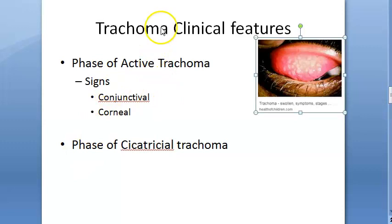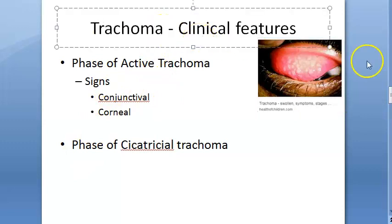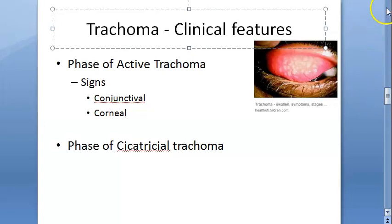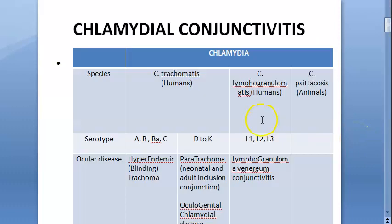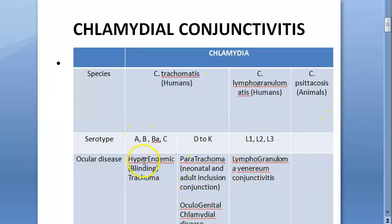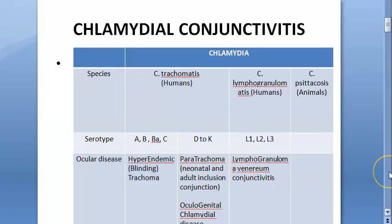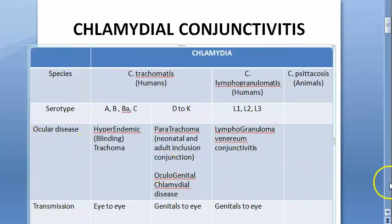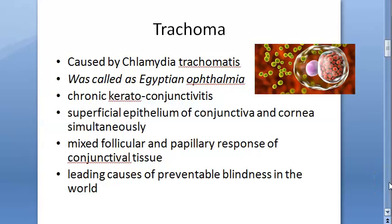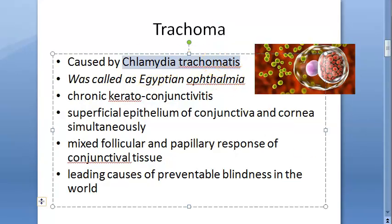In this video, let us look at the clinical features of trachoma. In the previous video, we looked at what trachoma is - the word trachoma in Greek means rough. It is caused by Chlamydia trachomatis, serotypes A, B, C. This is also called hyperendemic blinding trachoma because trachoma is a leading cause of preventable blindness, second only to cataract. Transmission is eye to eye.